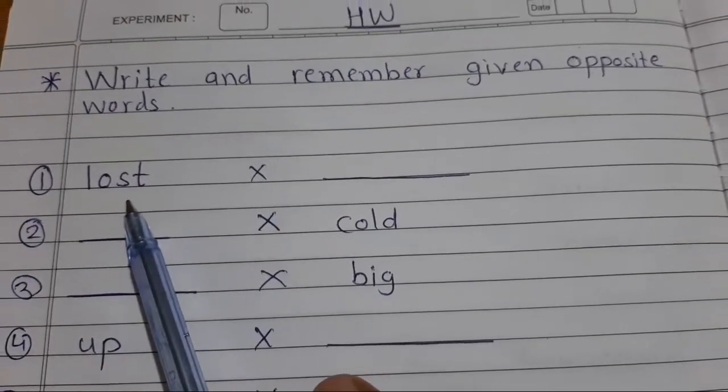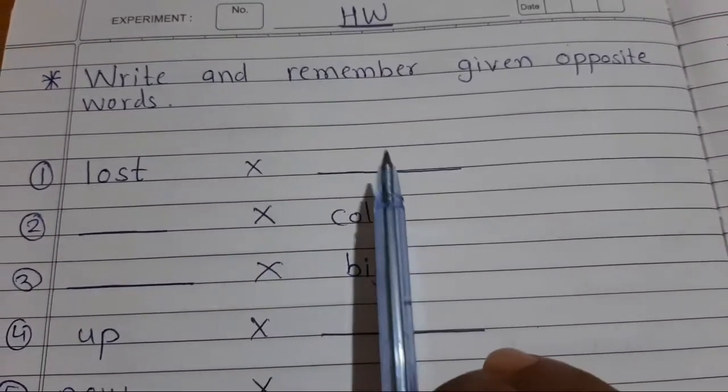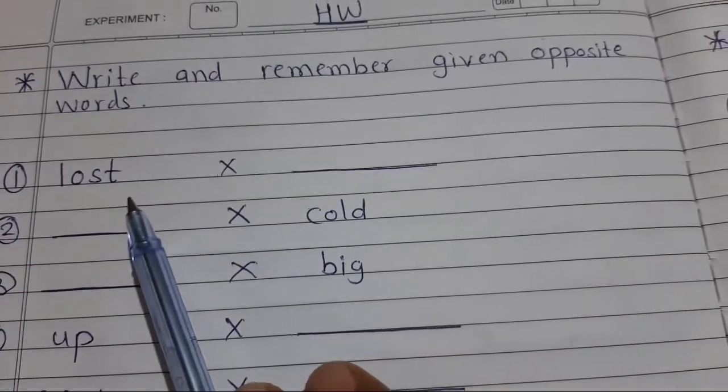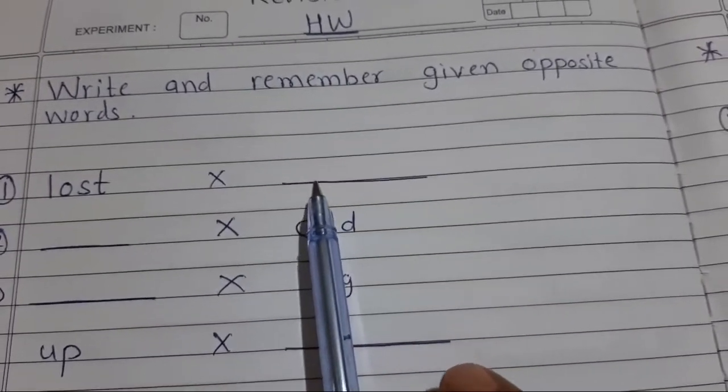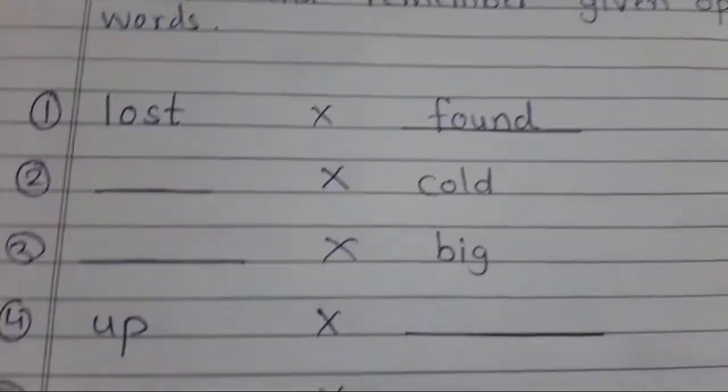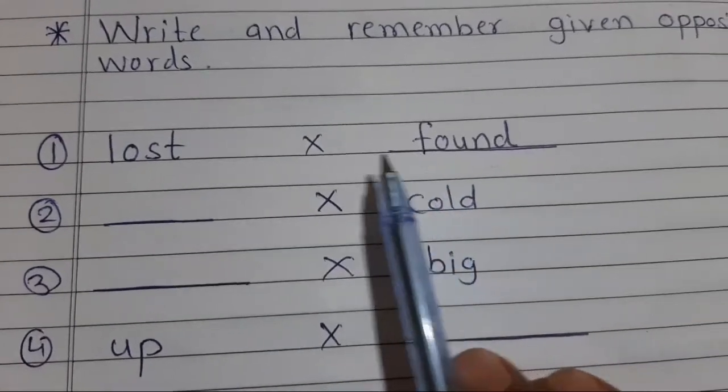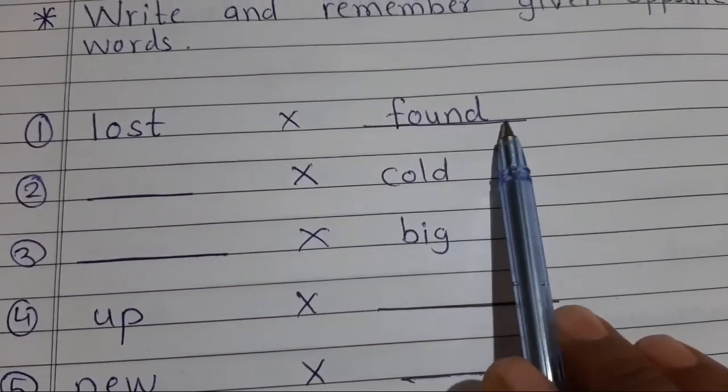First word is lost. What is the opposite of lost? Lost means khona. What is the opposite of lost? Found. So what is the spelling of found? F-O-U-N-D, see here. Lost, found, F-O-U-N-D, found.